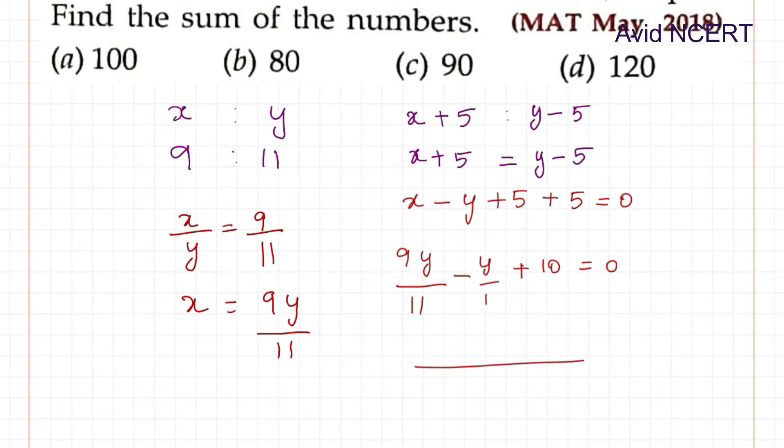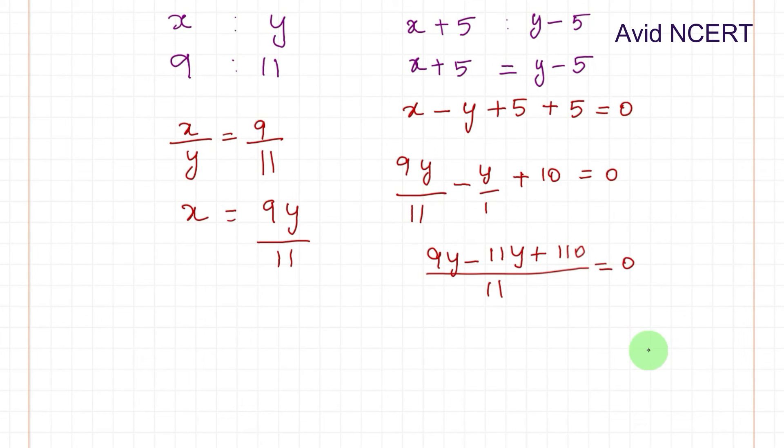So the LCM here is 11, which is 9y and for this second part 11 goes up, so which is 11y plus again 11 times 10 which is 110 equals 0. So cross multiplying, we get 9y minus 11y plus 110 equals 0.